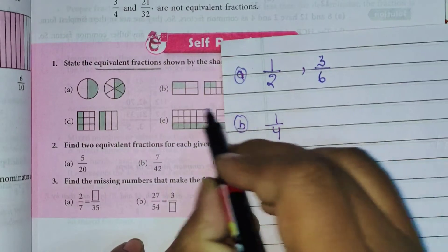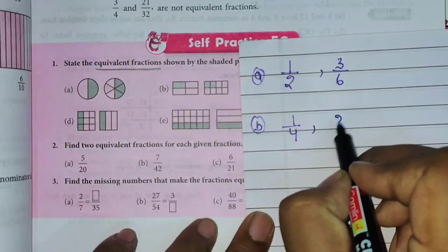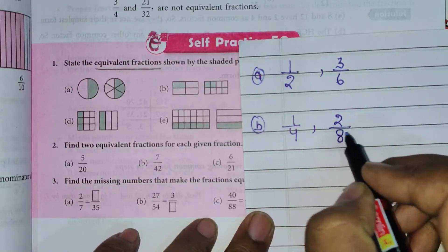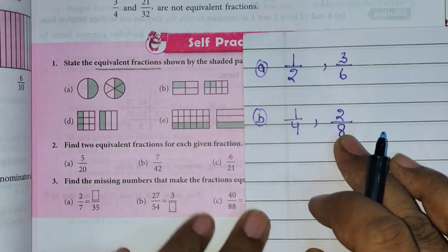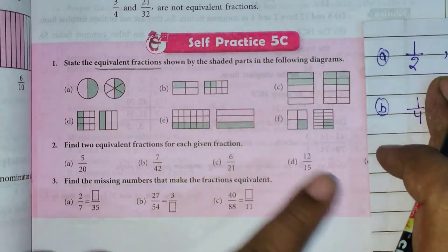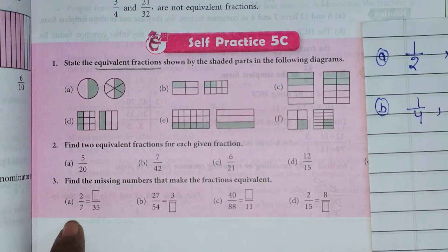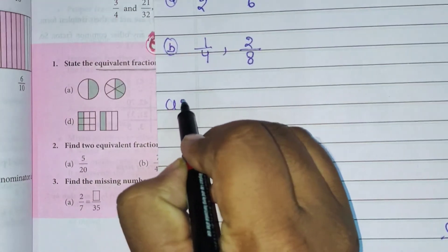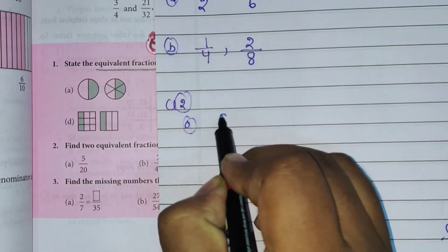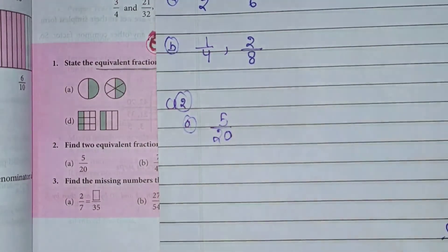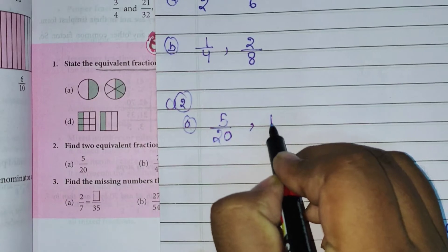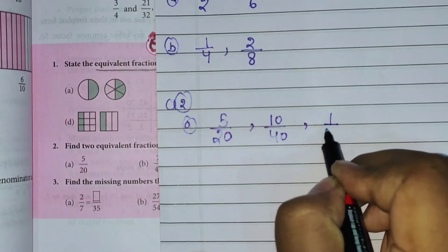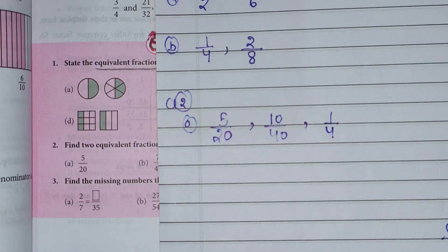Ab B part dekhte hain. Aap kahenge sir equivalent kaise — toh yeh one by two hai, jab hum isko reduce karenge toh yeh bhi one by two hi calculate hoga. Okay. Next aata hai first wale mein shaded part hai one by four — total four hai aur one shaded hai. And ismein aata hai two by total box dekhenge toh there will be eight. Toh aap dekhenge isko bhi jab hum reduce karenge toh yeh bhi hamaara one by four aayega — so it means both are equal.